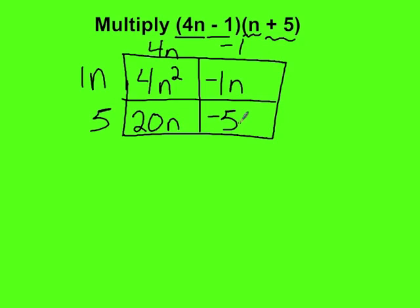Then we rewrite all the terms. 4n squared. A negative is the same as a subtraction sign, so minus 1n. Positive is like a plus sign, so plus 20n minus 5.